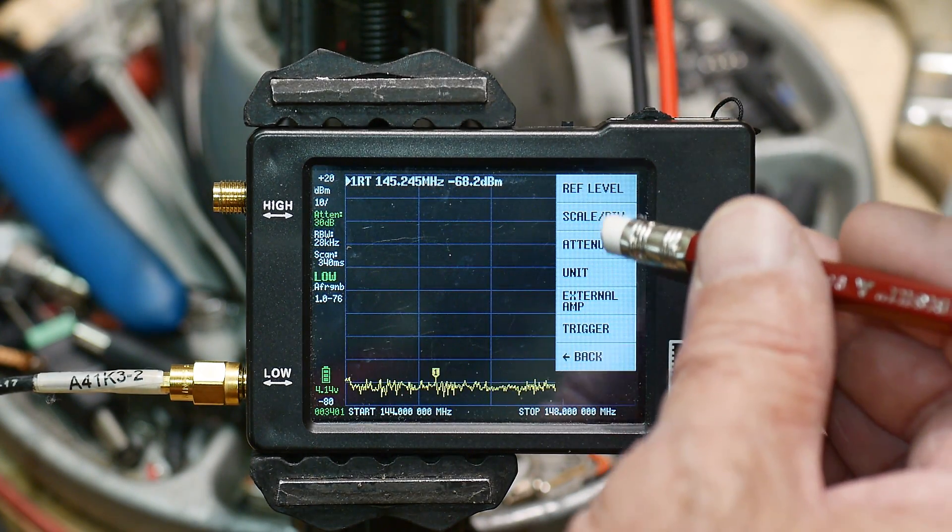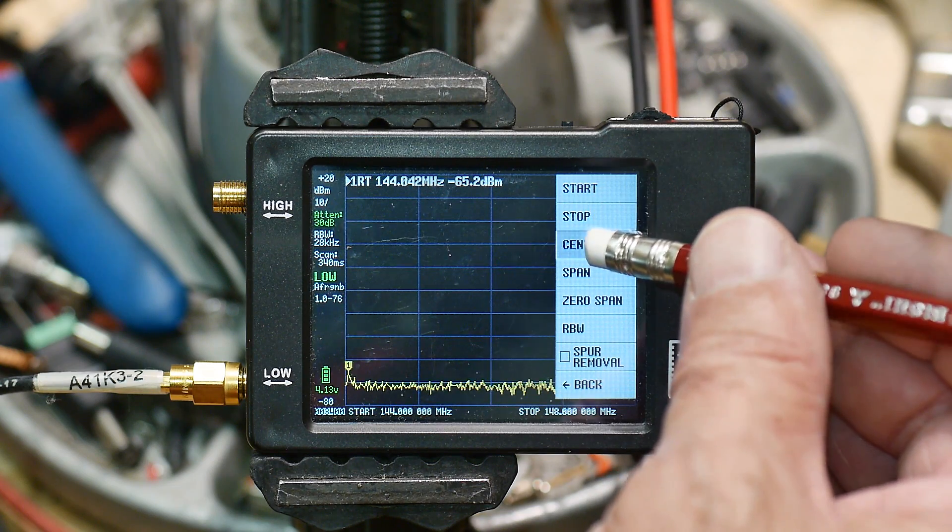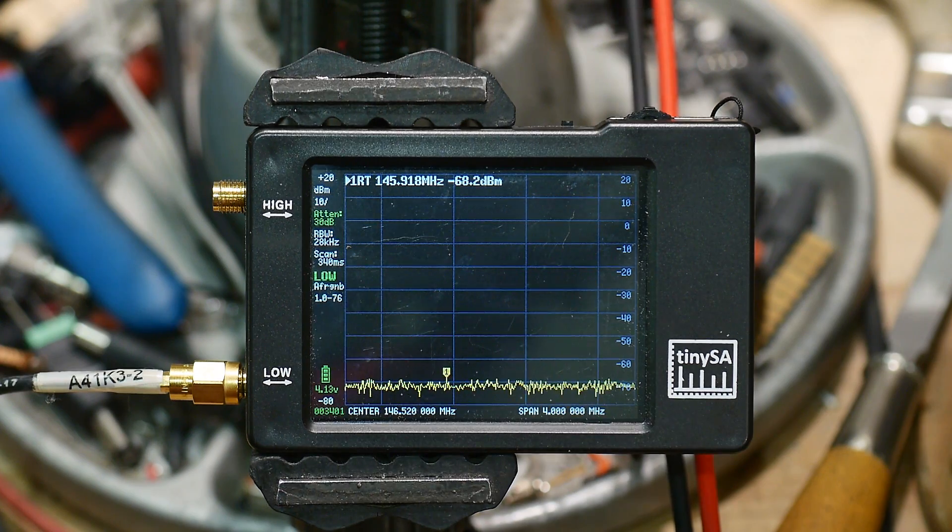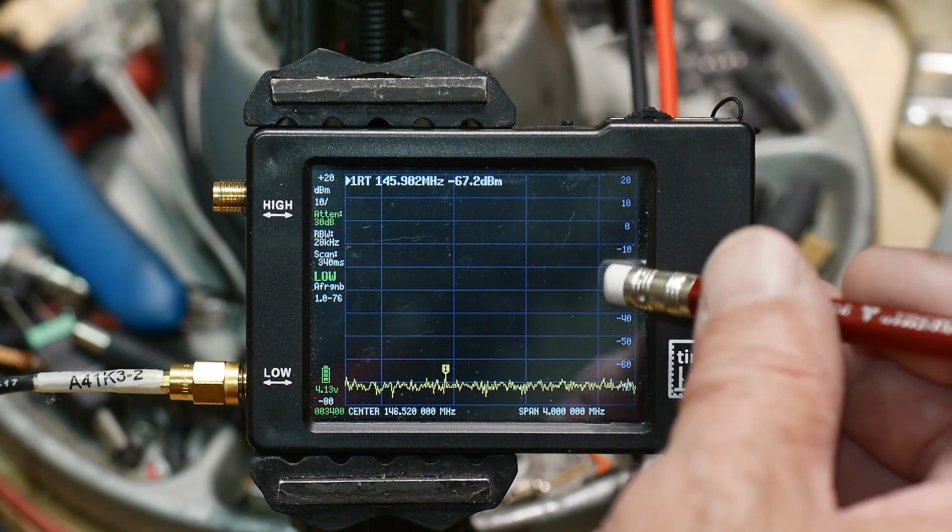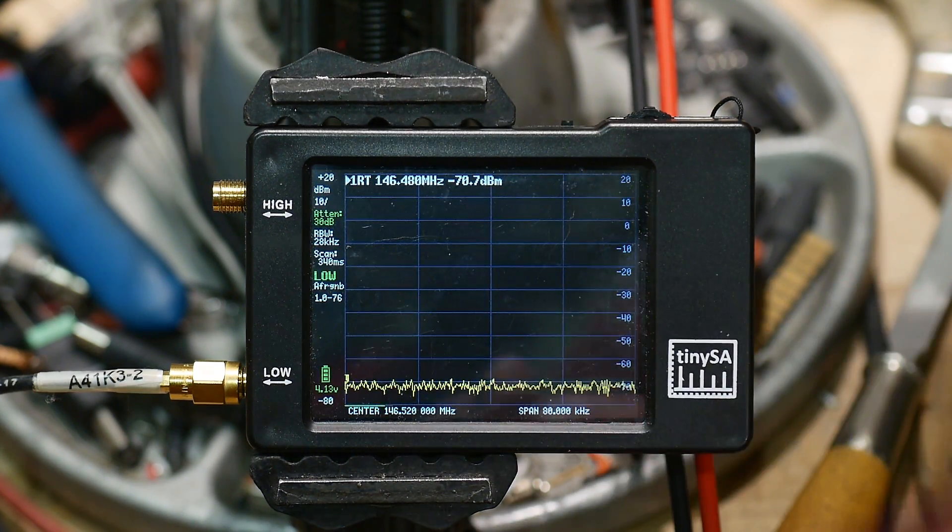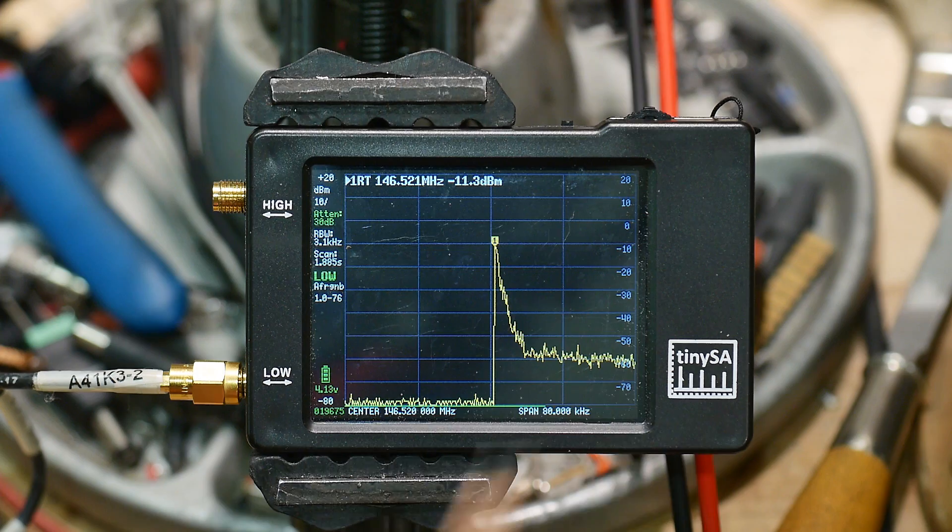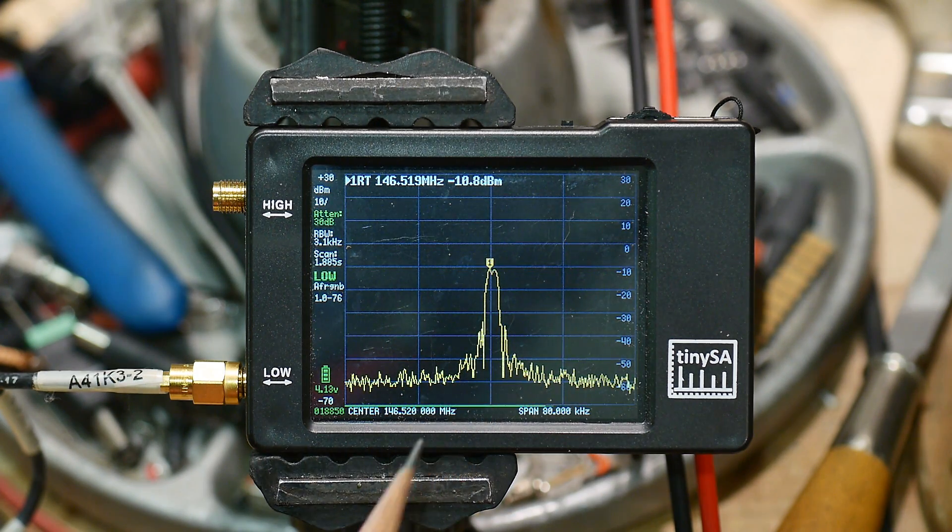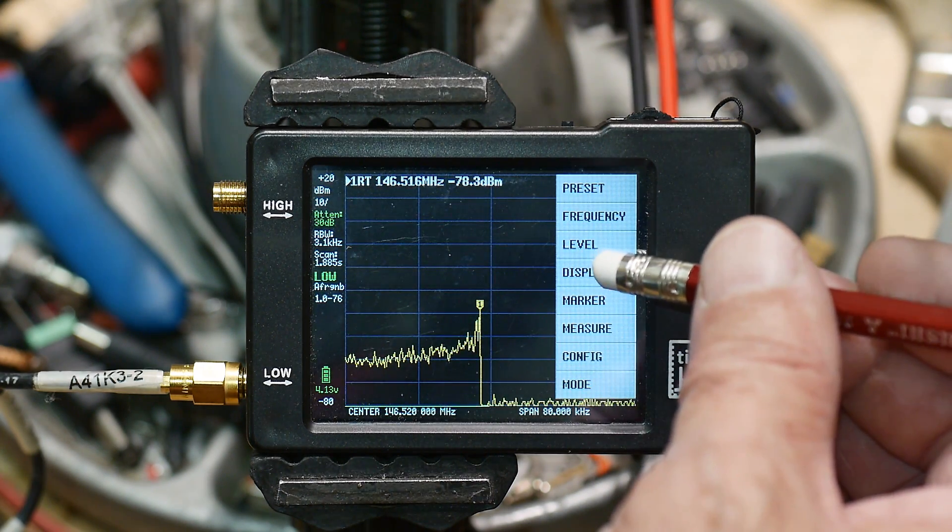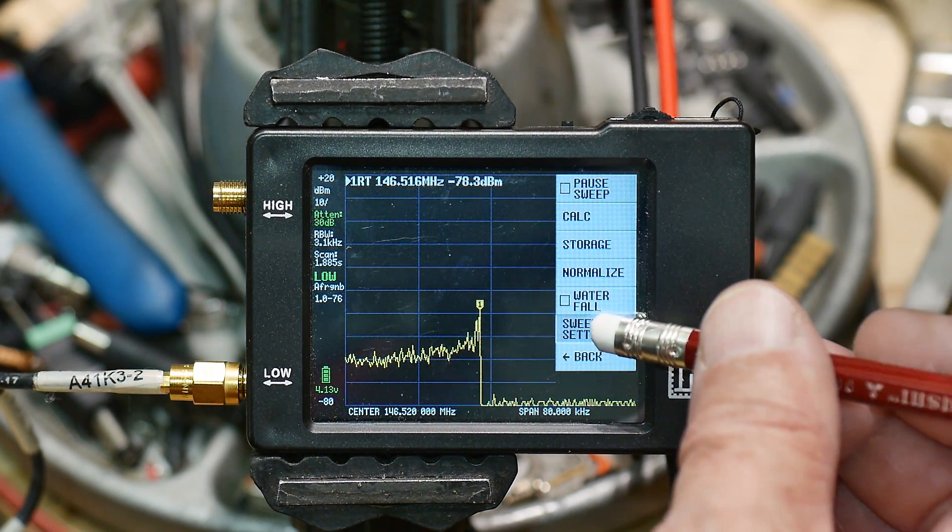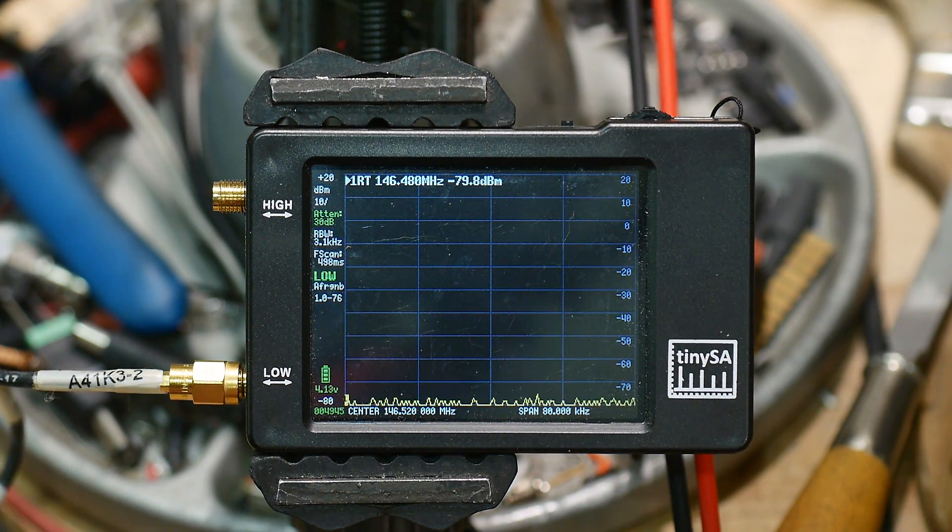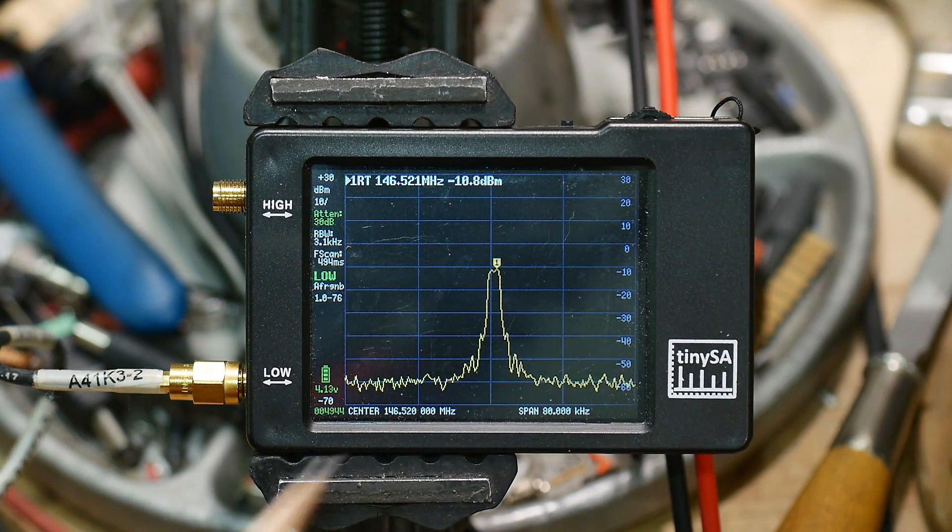Let's do frequency center 146.52 megahertz. See if we're in the middle. There we go. And then let's do a span of 80 kilohertz. It's sweeping quite slow. If we want to speed that up, we go to display, sweep settings. There's normal, precise, and fast. If we click on fast, now this thing's updating very quickly, which is really nice. So fast is good.